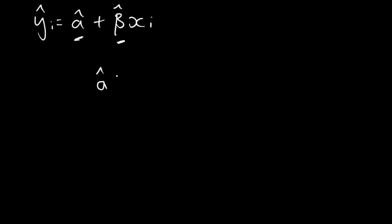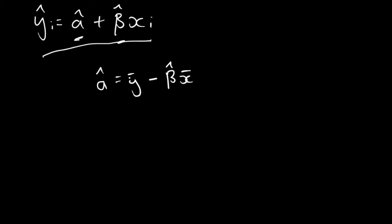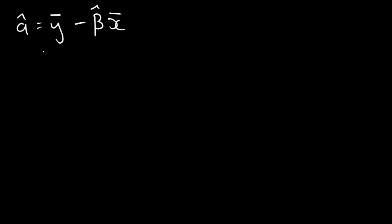In Part 1 we found that alpha hat equals the mean of y minus beta hat times the mean of x. The interpretation is that this is the value of alpha hat at which the difference between our estimated linear regression model and the true relationship is minimized. Now, using this value of alpha hat, we're going to derive the second parameter: beta hat.